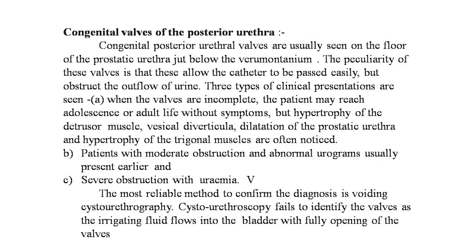When the valves are incomplete, the patient may reach adolescence or adult life without symptoms, but hypertrophy of the detrusor muscle, vesical diverticula, dilatation of the prostatic urethra, and hypertrophy of the trigonal muscles are often noticed. Patients with moderate obstruction and abnormal urogram usually present earlier, and severe obstruction presents with uremia.